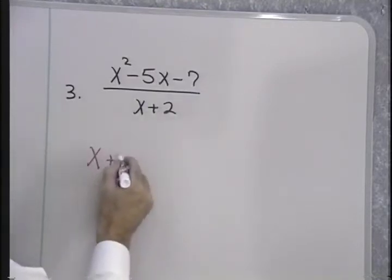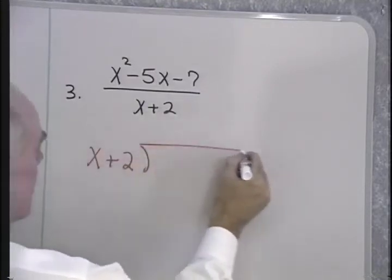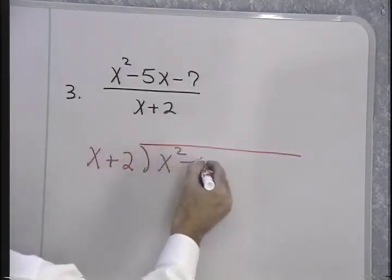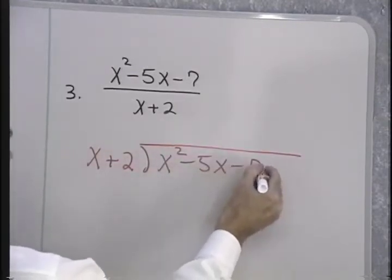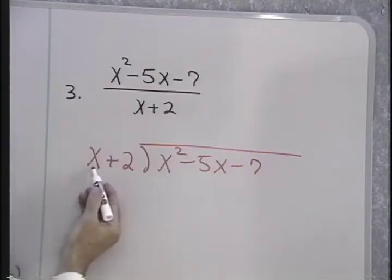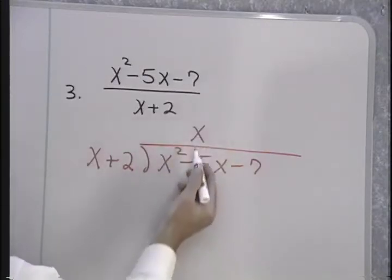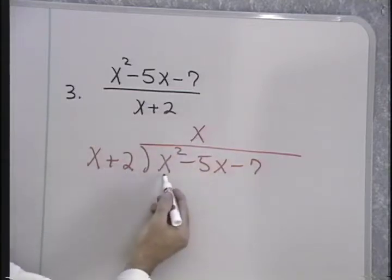So, instead, I'm going to use a form of long division, similar to long division with whole numbers. We'll go through it once here, and then you can try some. I estimate by dividing x into x squared, that will be x, because x times x gives me x squared.